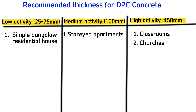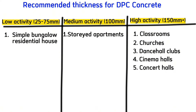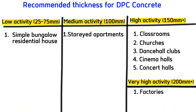For classrooms, churches, dance halls, clubs, cinema halls, and concert halls, the ground floor structure slab should be at least 150 millimeters because there is a lot of activity on that floor. For factories and heavy machinery industries, the ground floor structure slab should be above 200 millimeters because of the high level of activity taking place on that slab.